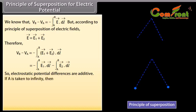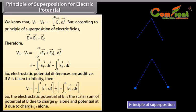If A is taken to infinity, then V equals the sum of minus integration from infinity to B of E1 vector dot dL vector and minus integration from infinity to B of E2 vector dot dL vector. So, the electrostatic potential at B is the scalar sum of potential at B due to charge Q1 alone and potential at B due to charge Q2 alone. This result is applicable for any number of charges.